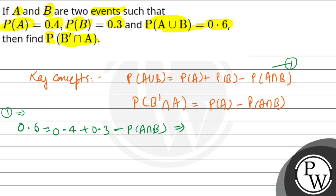So now what will be P of A intersection B value? 0.7 minus 0.6, that is 0.1. Okay, so now we will take it.